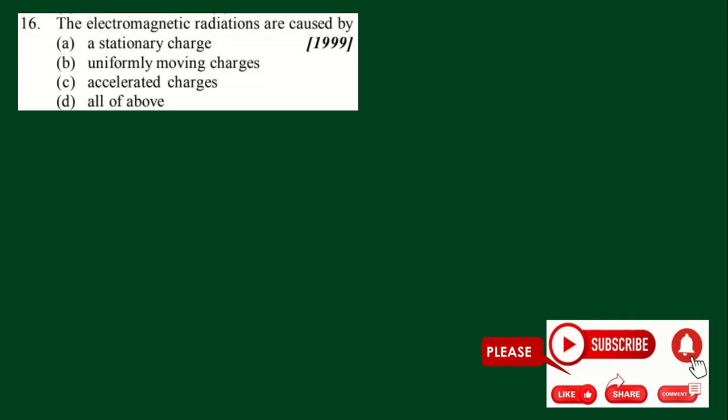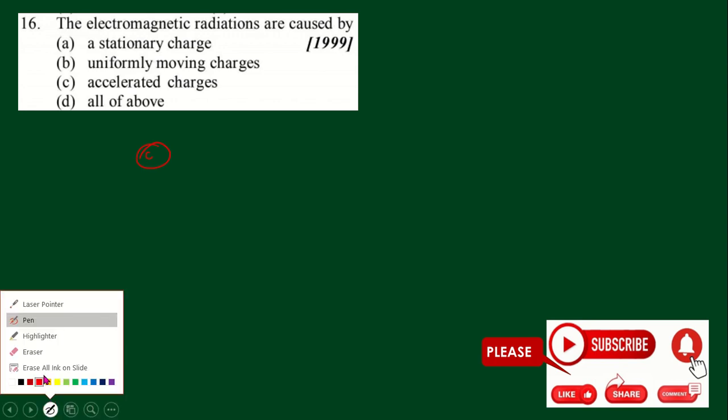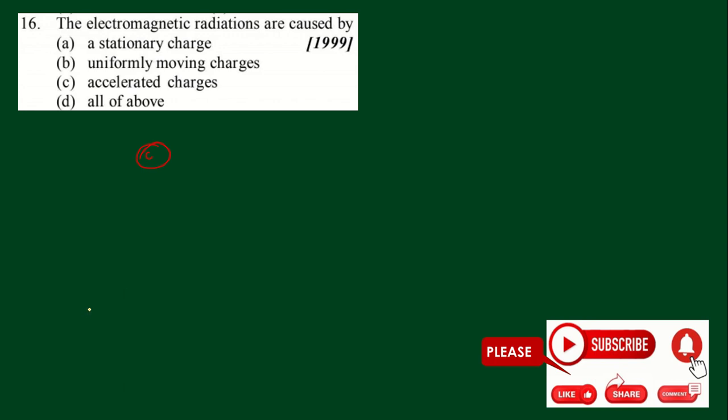The electromagnetic radiations are caused by Maxwell's prediction and Hertz's verification. Accelerated charges can produce electromagnetic waves. Keep in mind: a stationary charge always produces constant electric field, uniformly moving charges produce constant electric and magnetic fields, and accelerated charges can produce electromagnetic waves.